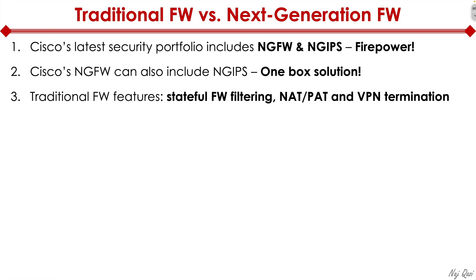Traditional firewall features include stateful firewall filtering — the firewall maintains a state table, tracks all incoming and outgoing traffic flows, looks for anomalous behavior, and can kill traffic that deviates from those flows. It also provides network address translation or port address translation. With a single public IP from your provider and multiple hosts on the LAN that need internet access, you use PAT — port address translation — where a single public IP maps to multiple internal private LAN IPs.